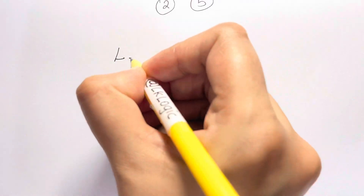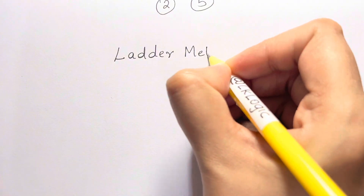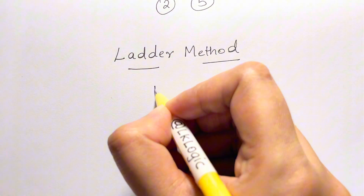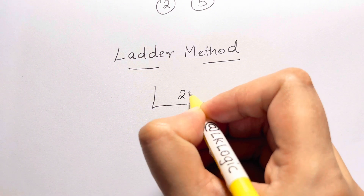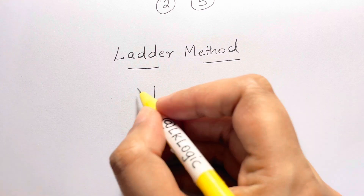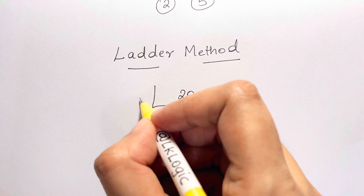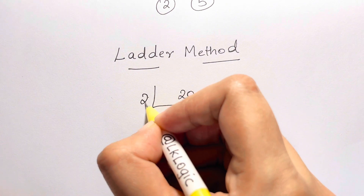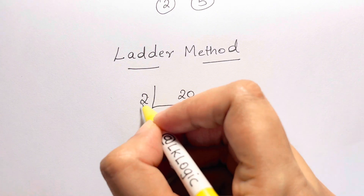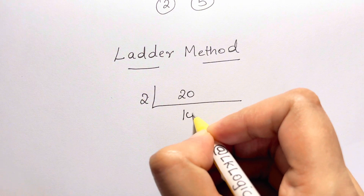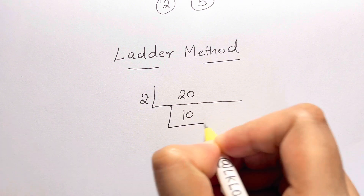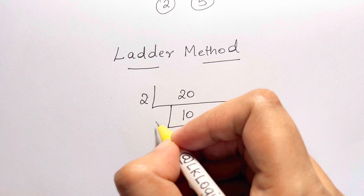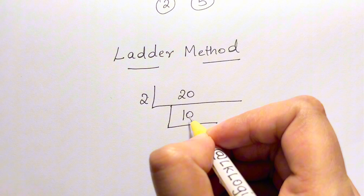Using the ladder method, you draw a ladder and write the number 20. Take the smallest prime number and check if 20 is divisible by it. Starting with 2: 20 ÷ 2 = 10. Then take the smallest prime again — you can repeat a prime if the number is still divisible by it.